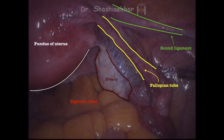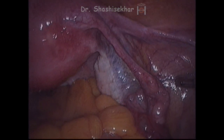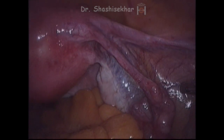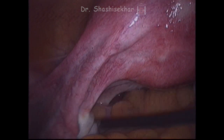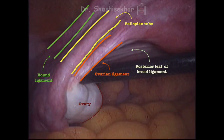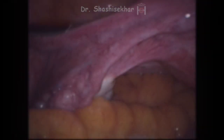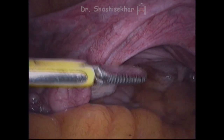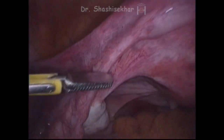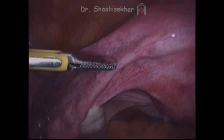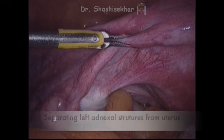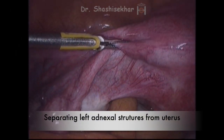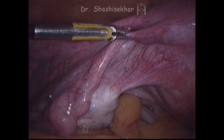As you can see, all the structures are labelled on the right side — these are essentially the ones you need to remove to mobilise the uterus. These are the structures on the left side: the round ligament, the ovarian ligament, the fallopian tube, the ovary, and the posterior leaf of the broad ligament. Before going for hysterectomy, we are inspecting the pouch of Douglas — that is the rectum you see. There is a minimal amount of serous fluid in the pouch of Douglas.